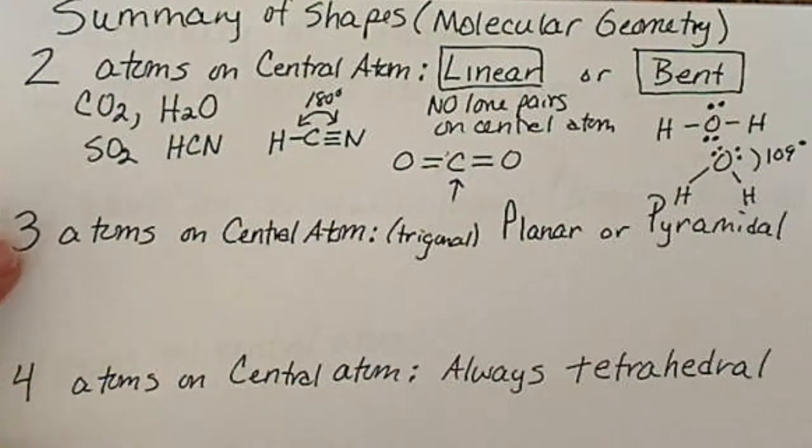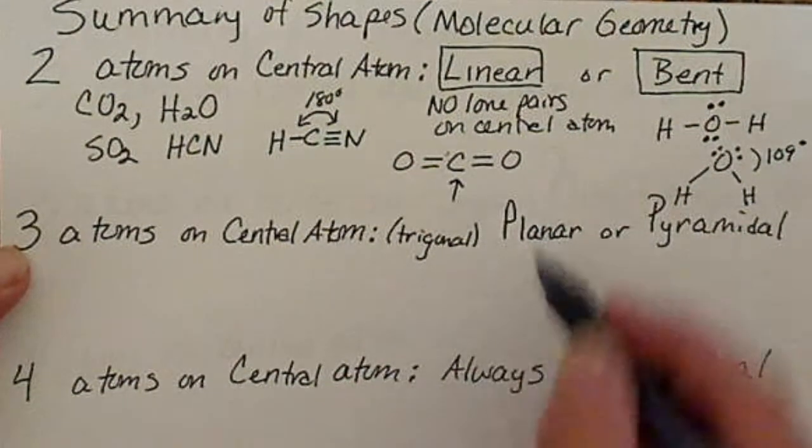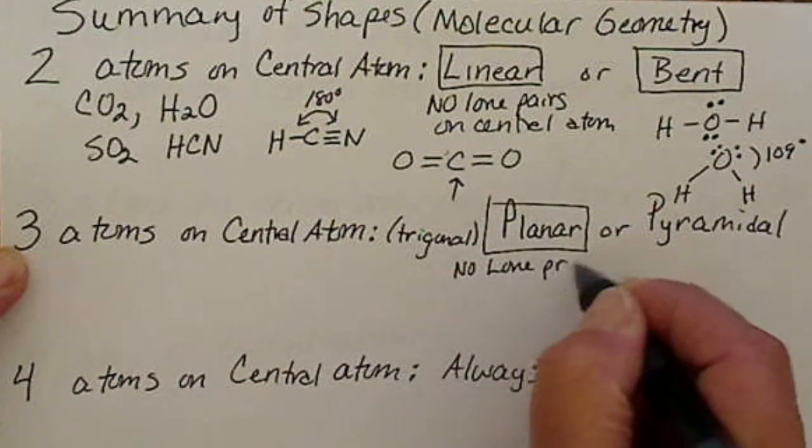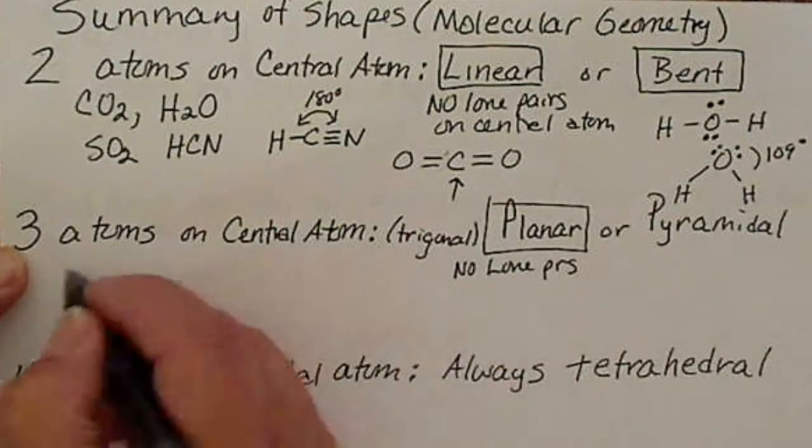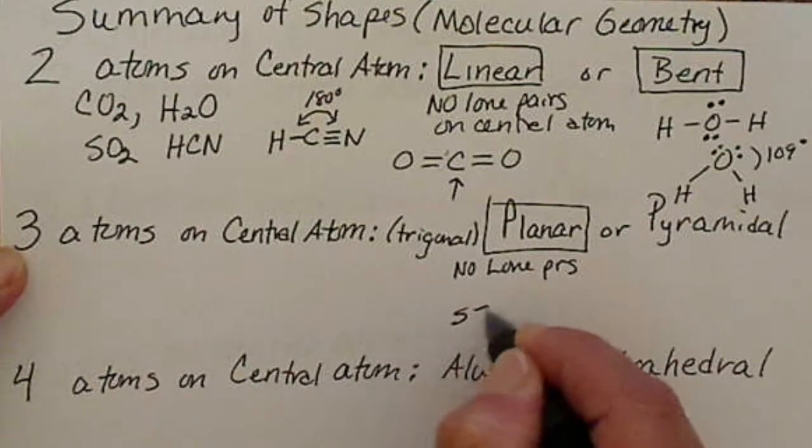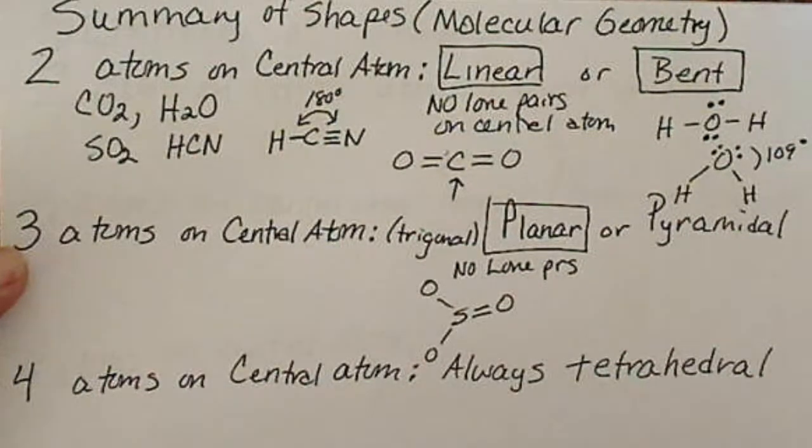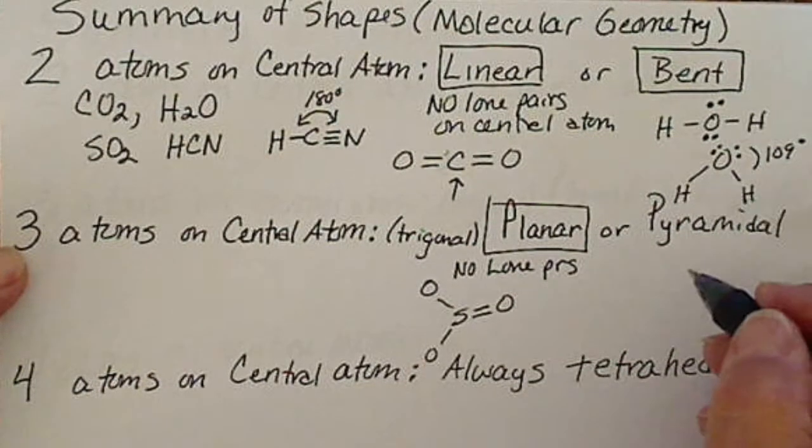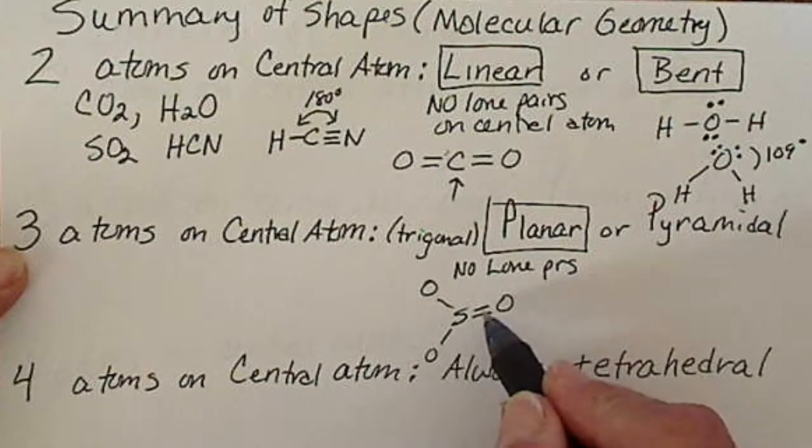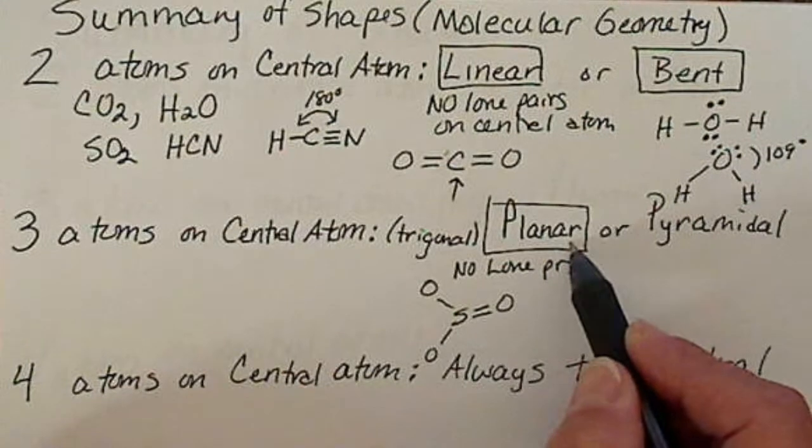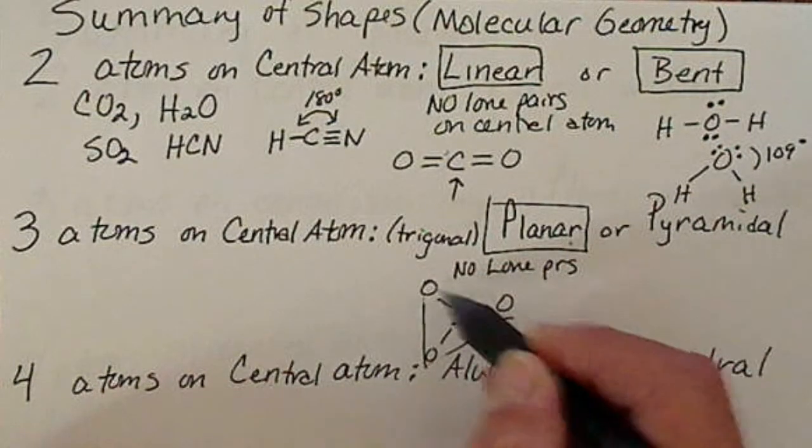The same thing is true for three atoms around the central atom. Planar again is no lone pairs of electrons, and we did an example of that, SO3, where we would have one double bond, two single bonds. In that case, sulfur has two, four, six, eight electrons around it. The planar molecule is the perfect triangle.